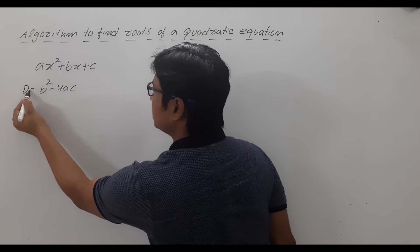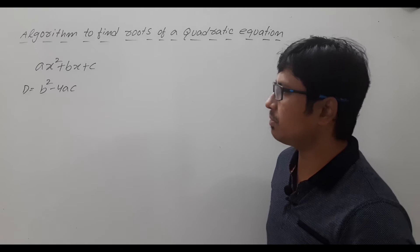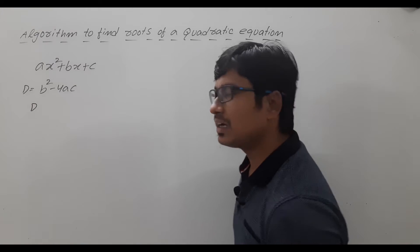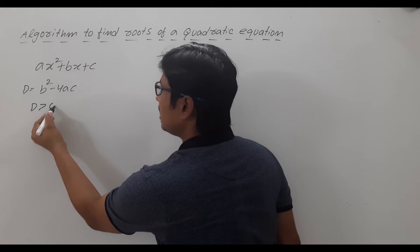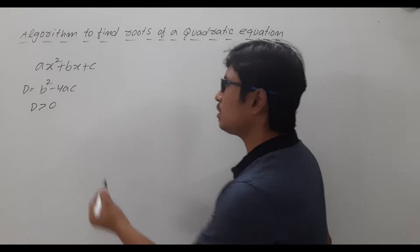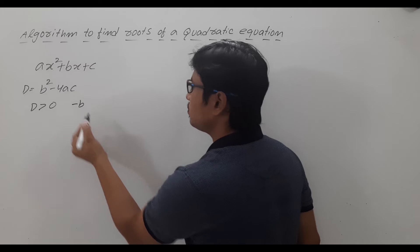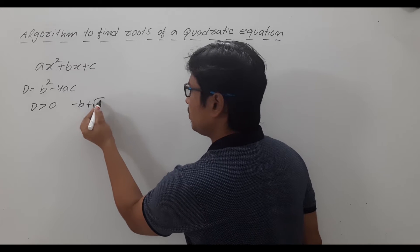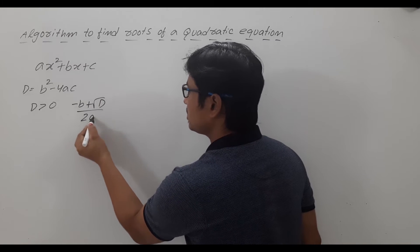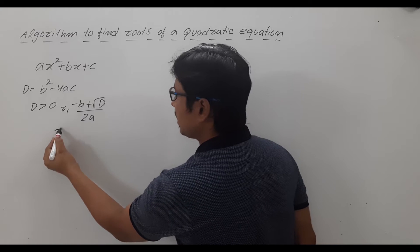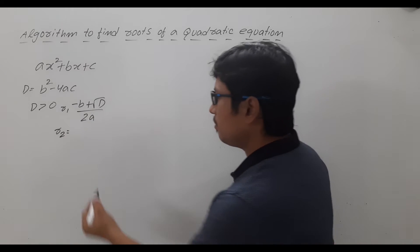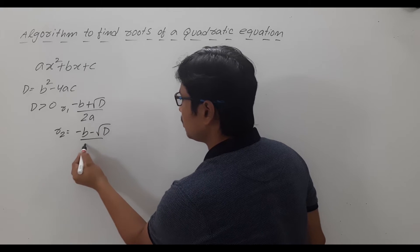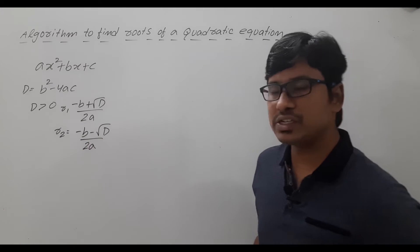First I will compute the discriminant, which is b² minus 4ac — I will call it d. So d = b² - 4ac. If d is greater than 0 then I will have two real roots: root 1 is (−b + √d) / 2a, and root 2 is (−b − √d) / 2a.